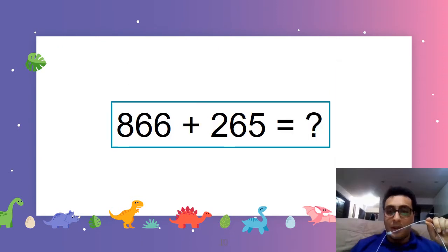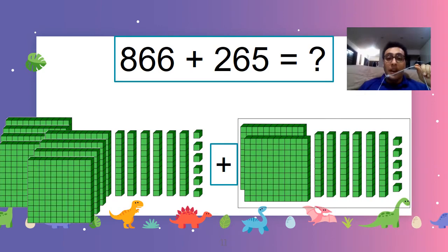Let's do another one. 866 plus 265. Oh my god. Equals. Let's see. Again, we write it in the column form. Before we get to that, let's see. This is 8 hundreds, 6 tens, which is 60, and 6 ones. 2 hundreds, 6 tens, 60, and 5 ones.